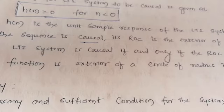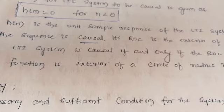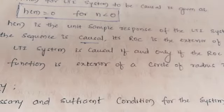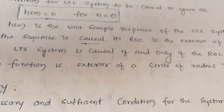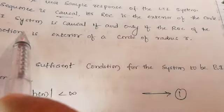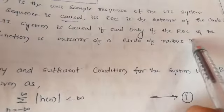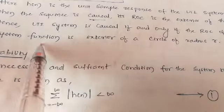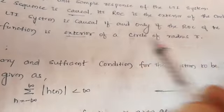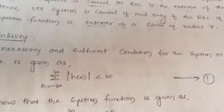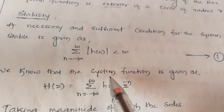The LTI system is said to be causal. H(n), the unit sample response, after taking the Z-transform gives H(z), whose ROC lies outside the circle of radius R. So an LTI system is causal if and only if the ROC of the system function is exterior to, or outside, the circle of radius R.